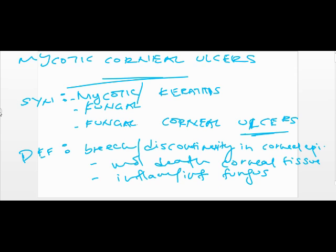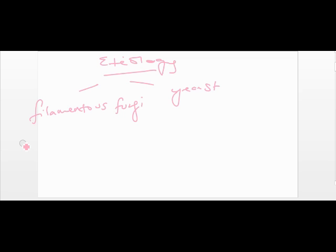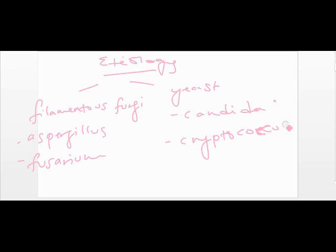Ulcer, by definition, is simply a breach or discontinuity in corneal epithelium which is associated with molecular death of corneal tissue. And all of this is due to an inflammation or infection of fungus, or due to fungal infection. Commonly it is seen in patients with lowered immunity.